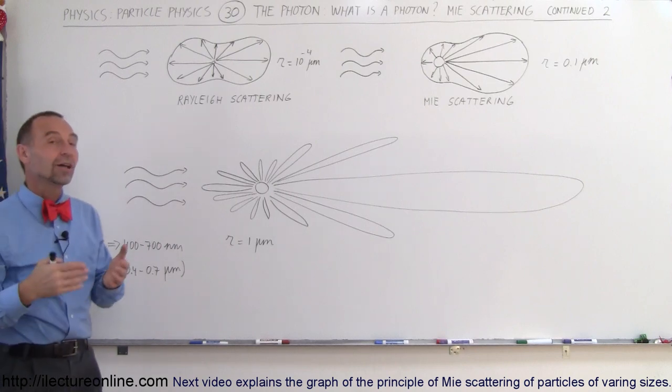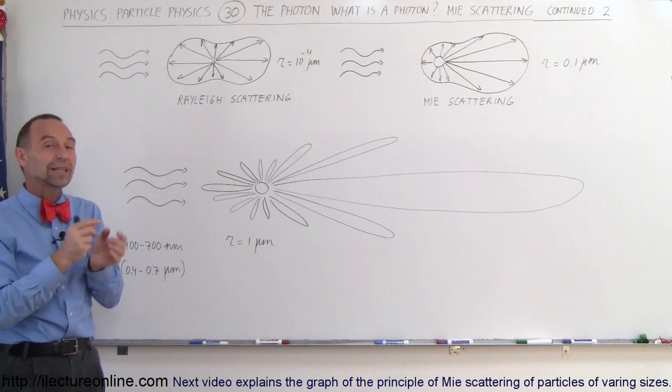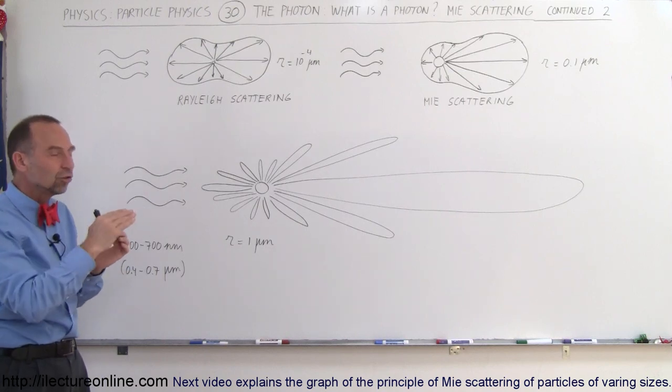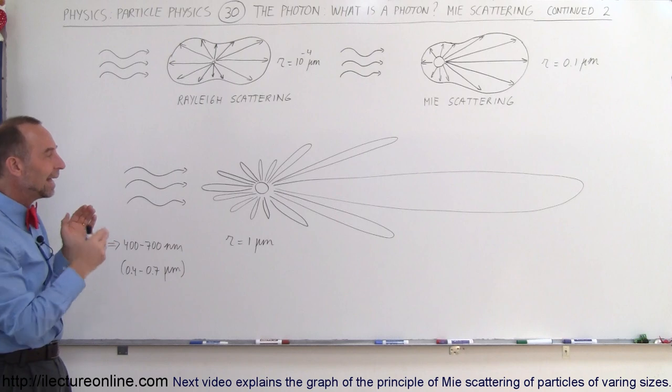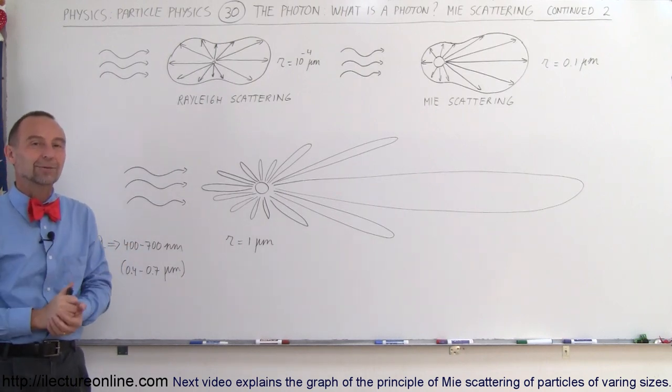So that's additional information to understand how photons work. And now in the next video, we'll get the details of how that relationship happens between the scattering coefficient and the various ratios of the particle size to the wavelength in Mie scattering.